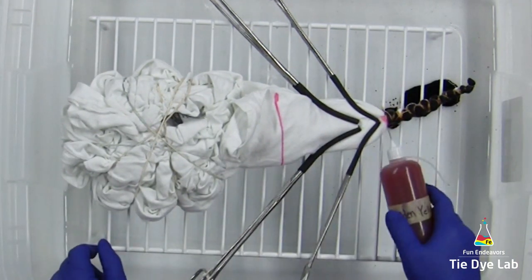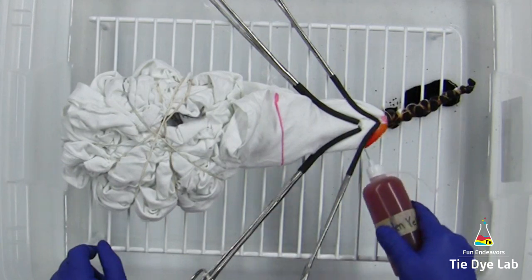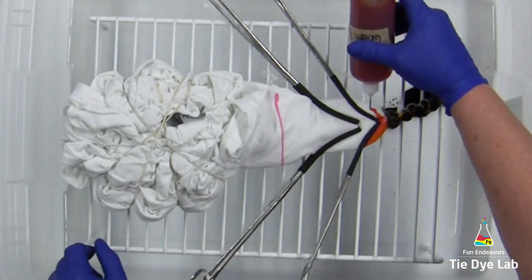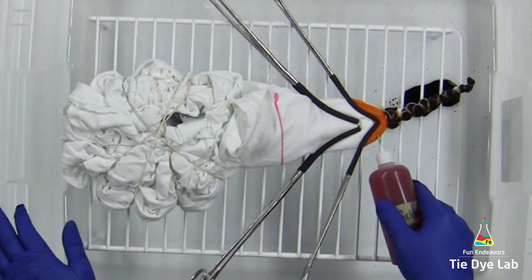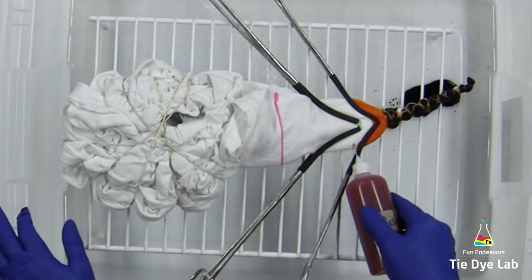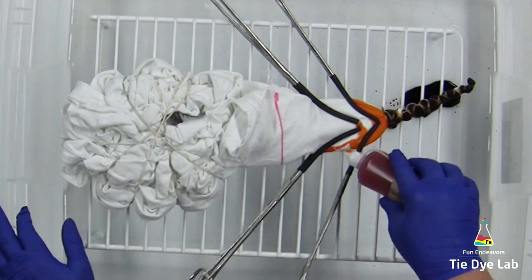For the petals of the sunflower I'm using golden yellow from Dharma. Because the shirt is dry, when I start applying the dye it readily soaks up this dye and is pulling it down into the middle of the petal area.